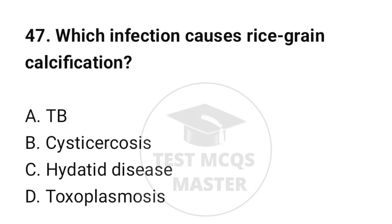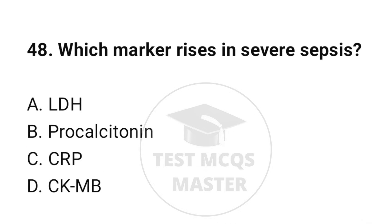Question number 47: Which infection causes rice grain calcification? The correct option is B: Cysticercosis. Question number 48: Which marker rises in severe sepsis? The correct option is B: Procalcitonin.